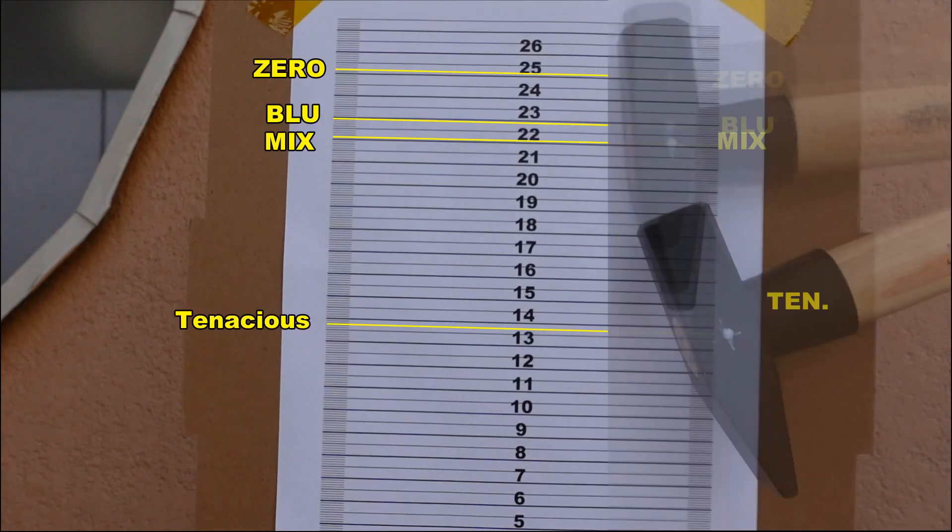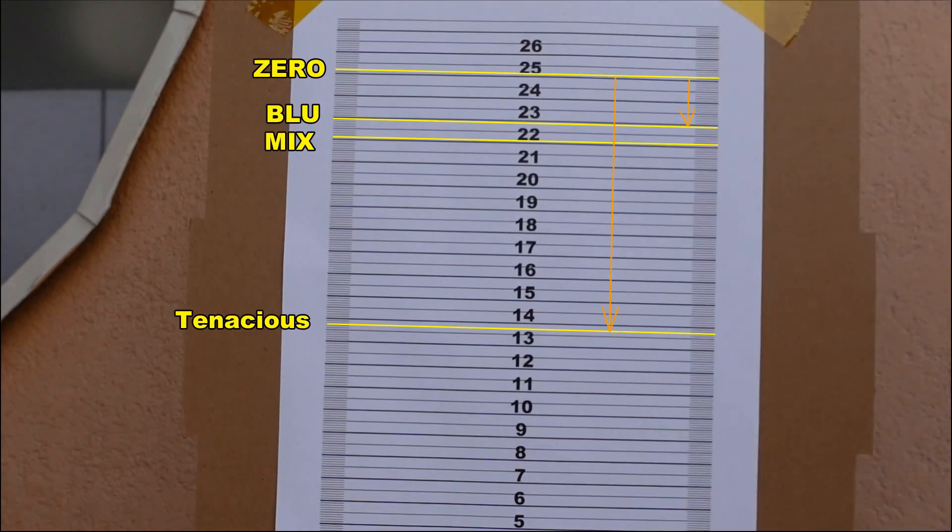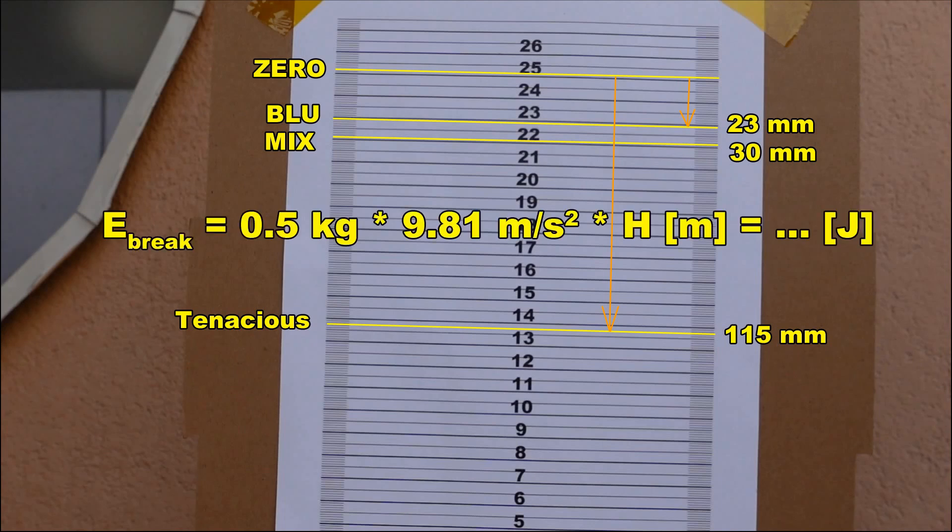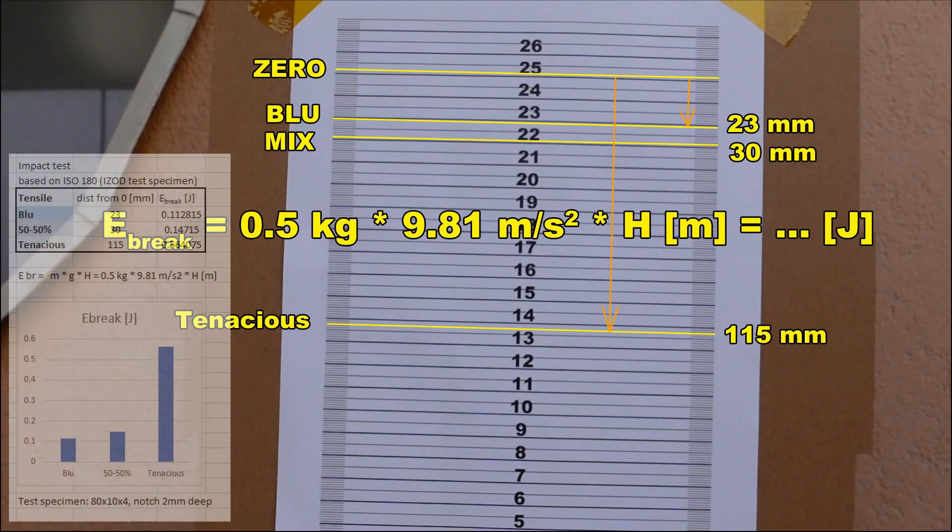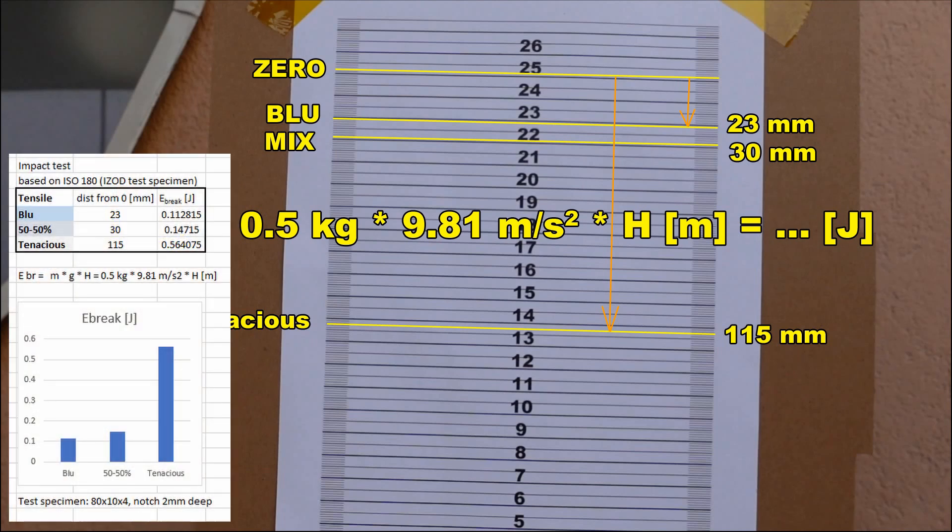If I mark with the lines the positions of the hammer and I measure everything from the zero position, I can get these values. But these are in millimeters, and I have to convert them into meters, and then I can use this equation and I will get the energy used for breaking the test specimens in joules. So from these three, the Blue is the most brittle material.